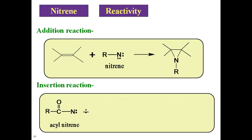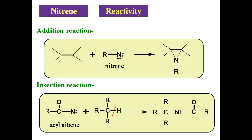Next, insertion reaction. When acyl nitrene comes in contact with any hydrocarbon — suppose R, C, R, R — and there is one C–H bond, the nitrene adds to that C–H bond. That acyl nitrene inserts in between carbon and hydrogen, and we get the corresponding product. The hydrogen goes onto the nitrogen, and we get the corresponding inserted product. Nitrene can be easily inserted in between a carbon and hydrogen bond.